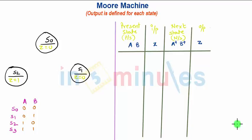Welcome to in 5 minutes. Today our topic is Moore machine. Moore machine is a state machine in which output is defined for each state.